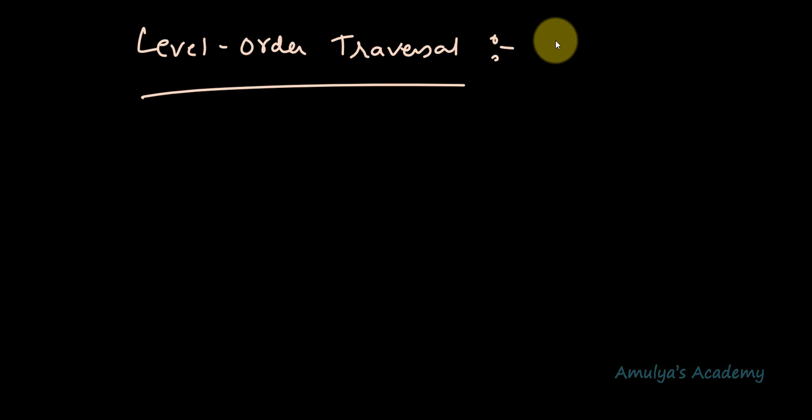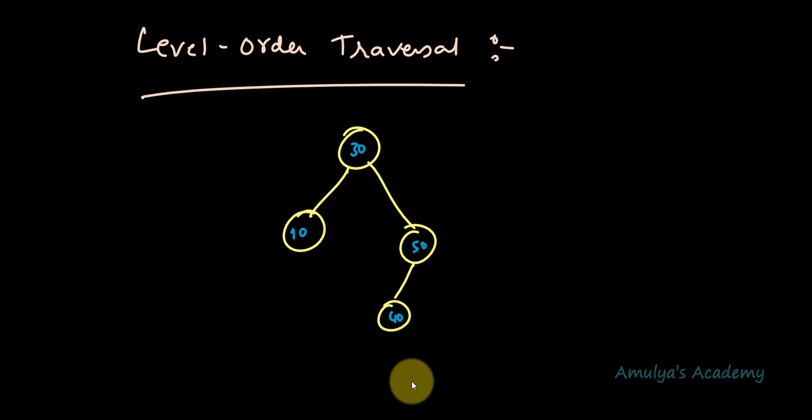Next, let's talk about another traversal algorithm: level order traversal. In level order traversal, all the nodes at a level are accessed before going to the next level — we visit nodes level-wise. We begin from level 0, complete all nodes of level 0, then go to level 1, then level 2, and so on. Here we are not traversing left subtree, root, right subtree — instead we visit nodes based on their level.